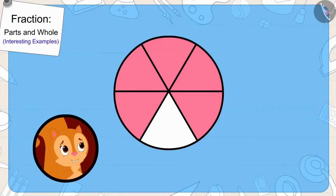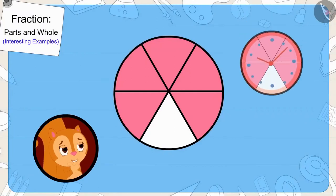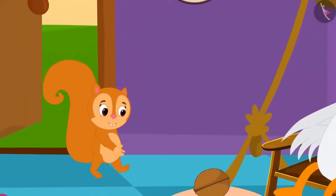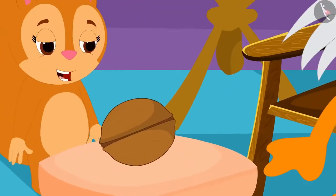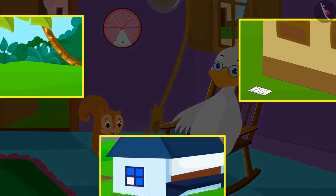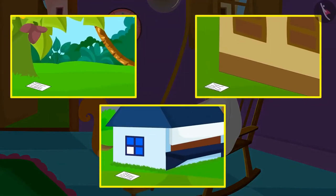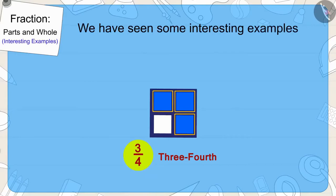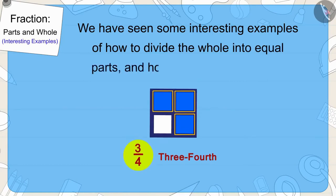There are six equal parts and five of them are pink. We can write it as a fraction in this way. Chanda remembered that she saw such a circle-shaped clock in Uncle's house. She reached Barbole Uncle's house and there she saw that Barbole Uncle had brought her her most cherished gift. He had written all these clues to give Chanda a surprise. Children, in this lesson we have seen interesting examples of dividing the whole into equal parts and writing it in fractions.